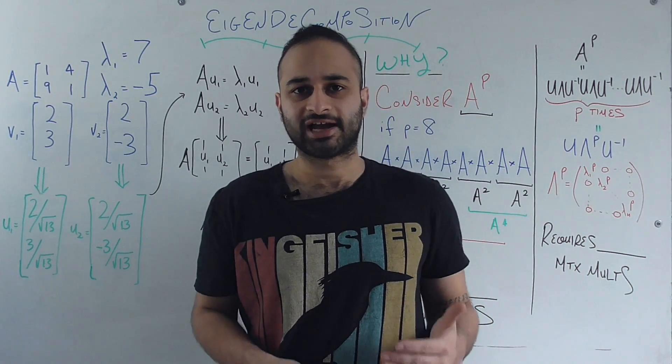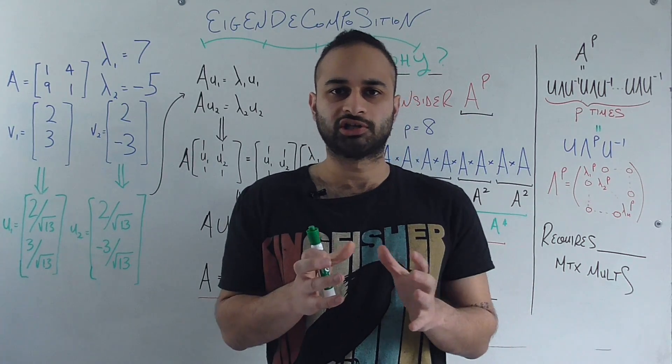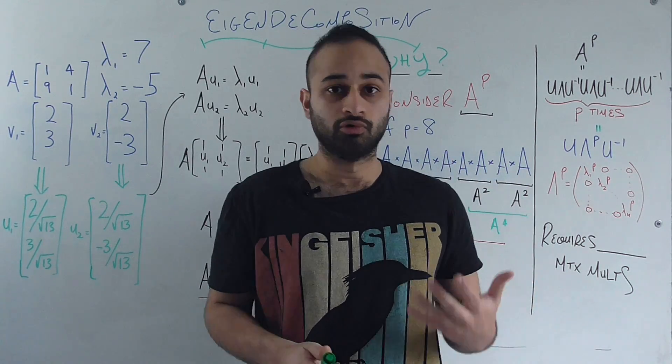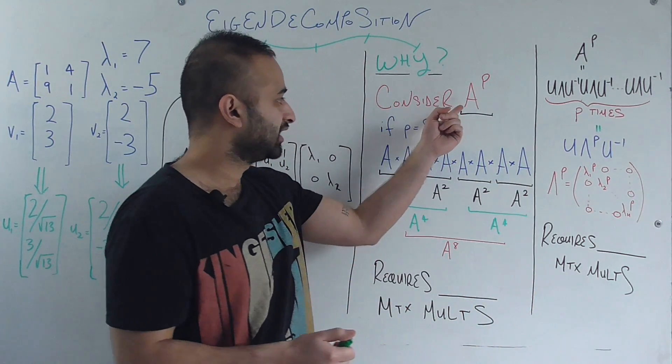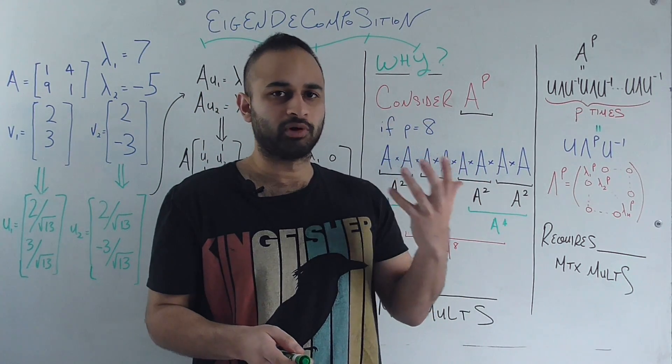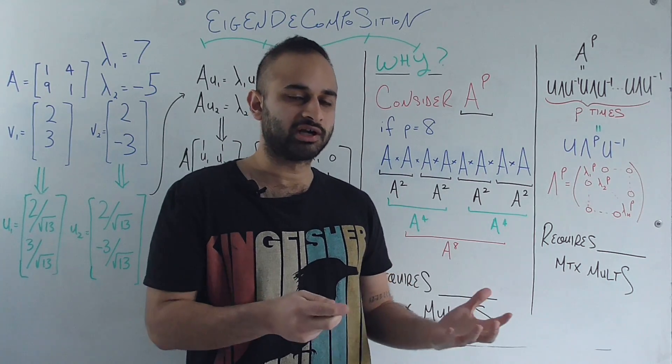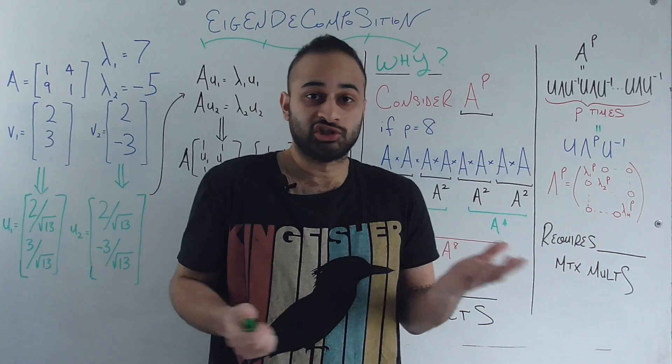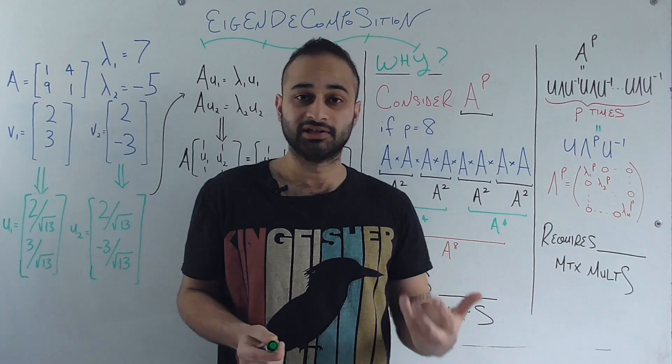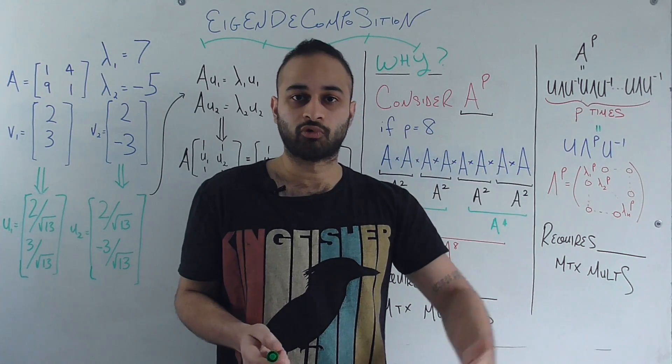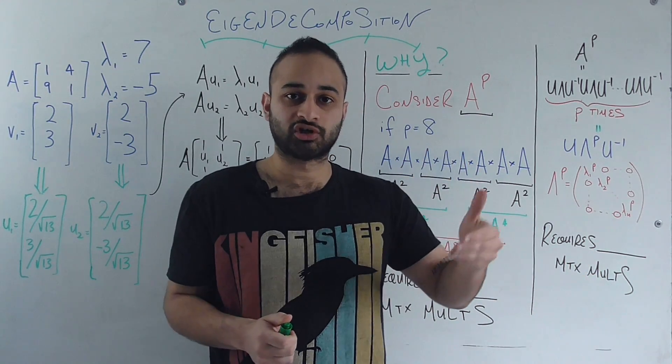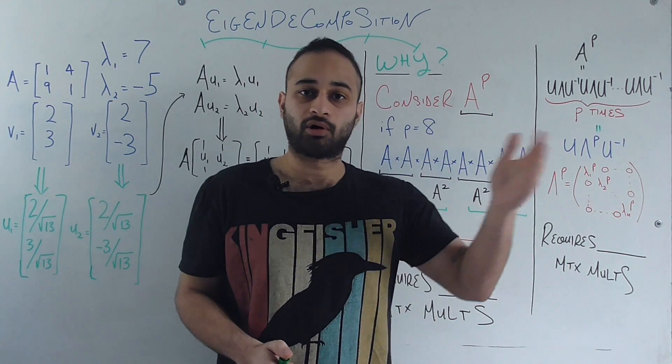But now the most important part of the video is why is this actually useful at all? What do we do by taking a matrix and splitting it up into these three component matrices? So consider this very common routine procedure we need to do in data science, which is taking a matrix to a power. Why is this a routine operation? Well, think about what a matrix is from your very first definition of linear algebra. A matrix is a linear transformation. A much easier way to say it is a function which maps some vector to another vector. And often in data science and machine learning, we're doing some kind of algorithm where we're applying this linear transformation at every step of the algorithm, which means that we have to apply this matrix several times, which ends up becoming a matrix to the power of some number.